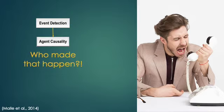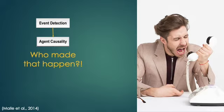This norm-violating event then triggers, typically implicitly, an assessment of agent causality: who made that happen? Here we're trying to trace the cause and determine whether an agent — a person or a group — caused that event.